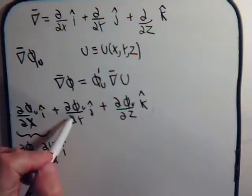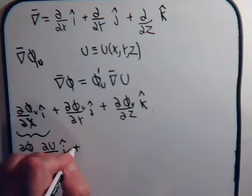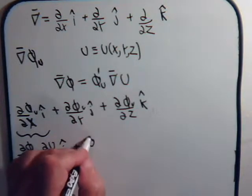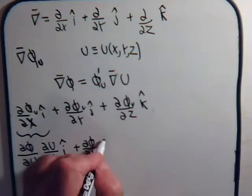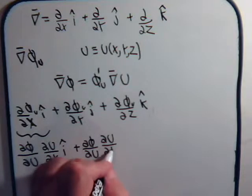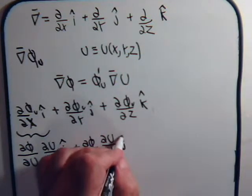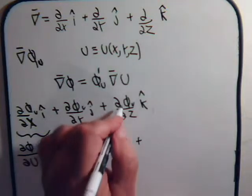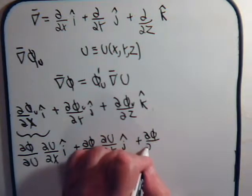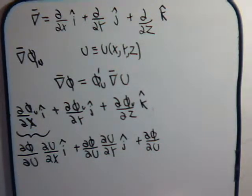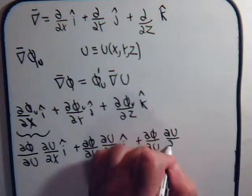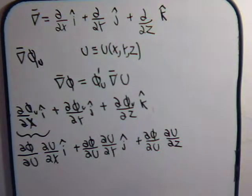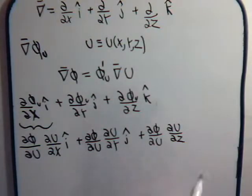Likewise, we can do the same for the other components. We get plus the partial of phi with respect to u times the partial of u with respect to y, times the j unit vector, and then plus the partial of phi with respect to u times the partial of u with respect to z, times the k unit vector.